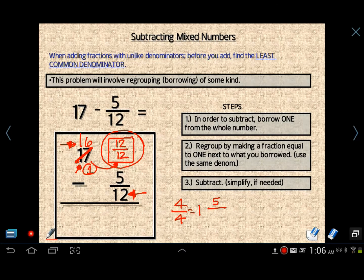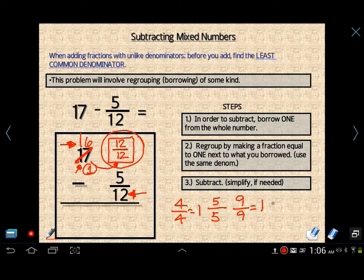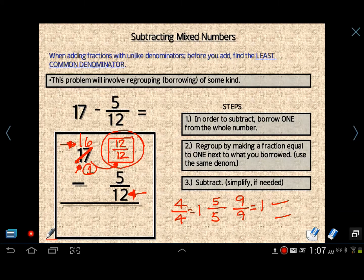4 4ths equals 1. 5 5ths equals 1. 9 9ths. The list goes on and on. So we have now 16 and 12 12ths minus 5 12ths. Doesn't seem like it's right, but it is. 12 minus 5 is 7. Don't subtract denominators. And then 16 just drops down.